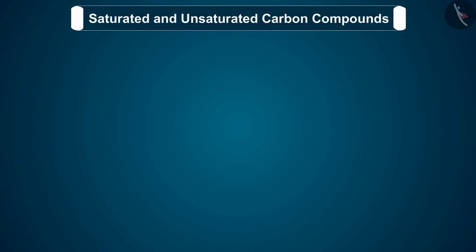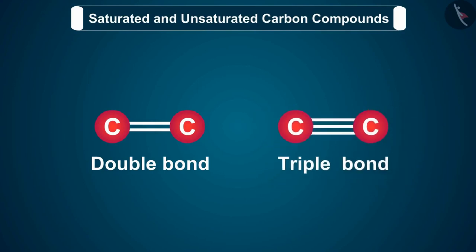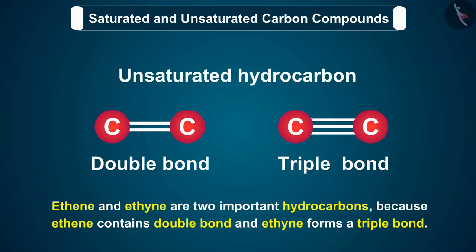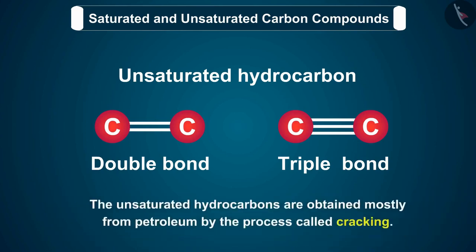A hydrocarbon in which the two carbon atoms are connected by a double bond or a triple bond is called an unsaturated hydrocarbon. Ethene and ethyne are two important hydrocarbons because ethene contains a double bond and ethyne forms a triple bond. A double bond is formed by sharing two pairs of electrons between the two carbon atoms, whereas a triple bond is formed by the sharing of three pairs of electrons between two carbon atoms. The unsaturated hydrocarbons are obtained mostly from petroleum by the process called cracking.